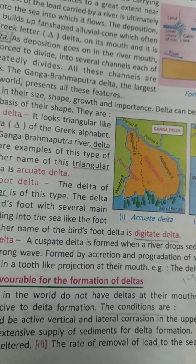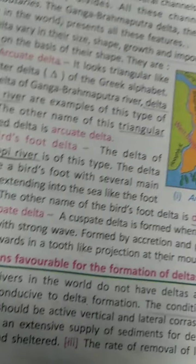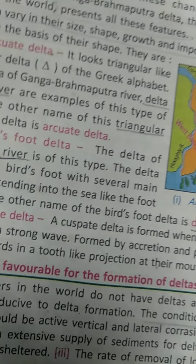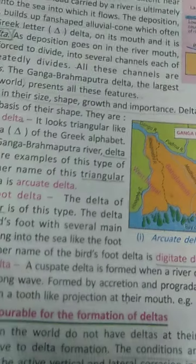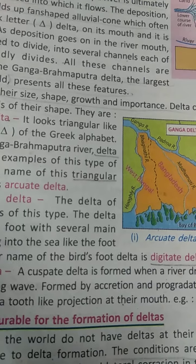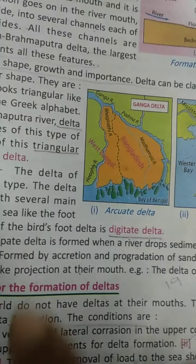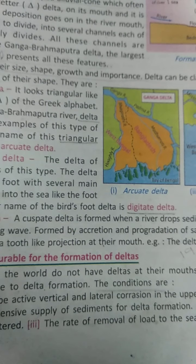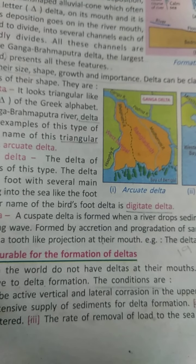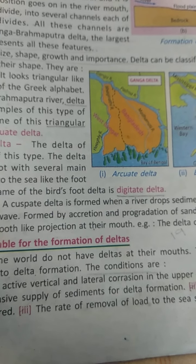Next is the cuspate delta. This is the delta where the river deposits sediment onto a straight shoreline along the front. As with estuaries, the river does not flow coarsely — tides come and wash away the sediments. From the accumulation of sand and sediment they extend outwards, not forming inside, coming out in the form of a tooth shape near the mouth of the river. This type can be found in the Ebro river in Spain.